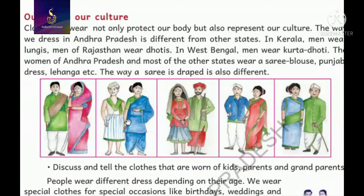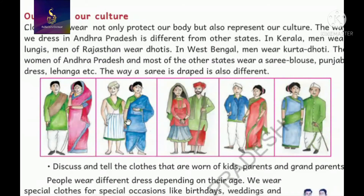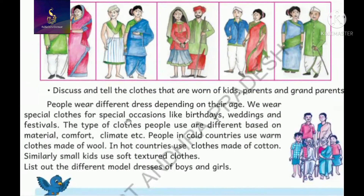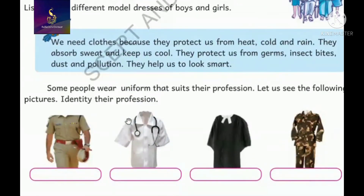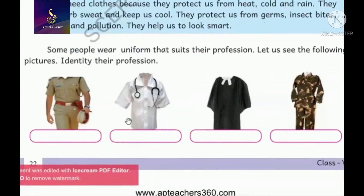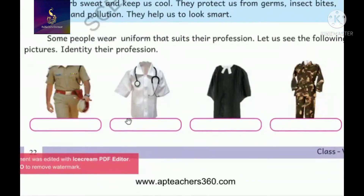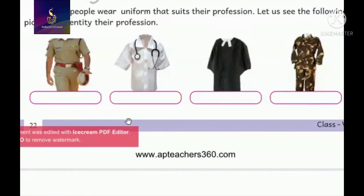Which type of dresses do we wear? Look - in Kerala, Maharashtra, and West Bengal, various types of dresses are worn at marriages, functions, and birthdays by females, males, children, adults, and old people. Clothes protect us from germs, insect bites, pollution, and dust, and we look smart. Clothes also denote uniforms and professions - note this down in your textbook.